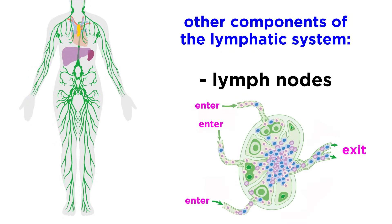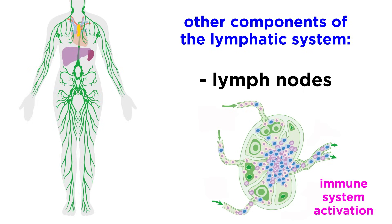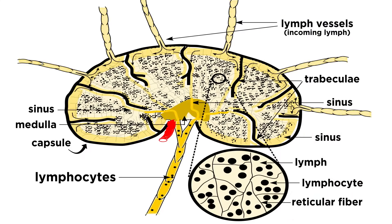Clustered along the lymphatic vessels are many lymph nodes, which are the main lymphoid organ. These nodes act as filters, and macrophages destroy pathogens and other things that don't belong there, preventing them from spreading throughout the body. Lymph nodes also serve to activate the immune system. Looking more closely at the structure of a lymph node, these consist of a dense fibrous capsule and strands of connective tissue called trabeculae that divide the node into compartments. Inside we can see the cortex, packed with follicles, and the medulla, which is comprised of medullary cords and sinuses. The sinuses are where the macrophages patrol for intruders.